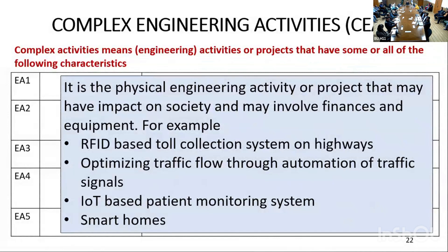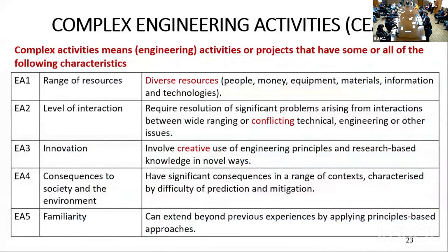Another example is an IoT-based patient monitoring system, which can involve a lot of equipment, finances, society, programming, and smartphones. It has five shifts or parameters. The first is range of resources — EA1. It should involve a good range of resources such as multiple people, money, equipment, materials, information, and technologies. Engaging diverse resources qualifies as the EA1 parameter.